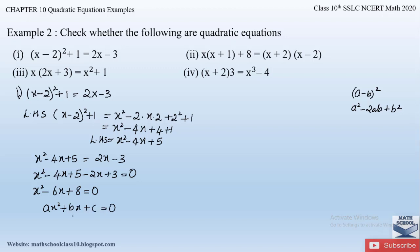This equation is of the standard form ax² + bx + c = 0, which is the standard form of a quadratic equation. We can also notice that a is not equal to 0; here a = 1, the coefficient of x². Since it is of this standard form and a ≠ 0, the given equation is a quadratic equation.